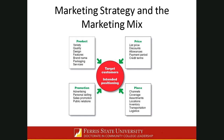When we look at the product, we have to consider the variety of our offerings. You may be in a smaller college with 30 to 40 programs, or a large college with 150 to 160 programs or certificates. That variety helps define our product. Quality also helps define our product — many of you may be Aspen Award winners or recognized by U.S. News and World Report, and my guess is you capitalize on that.